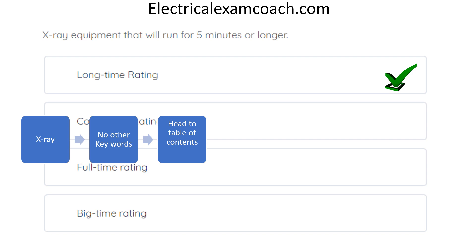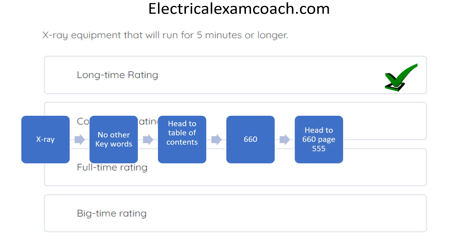Thankfully, specialty articles are very small. The table of contents also gave us the page number — page 555. When we got there and looked at the first few black bold headings, 'long-time rating' popped out as one of our four answer choices. It was the definition we were looking for: X-ray equipment that will run for five minutes or longer.